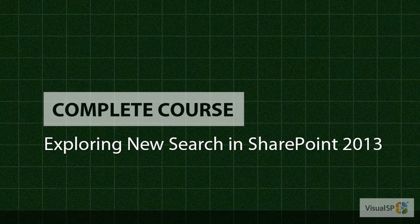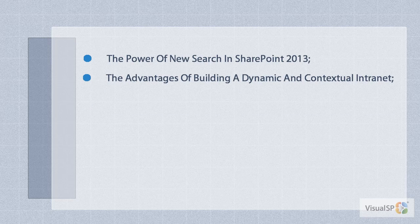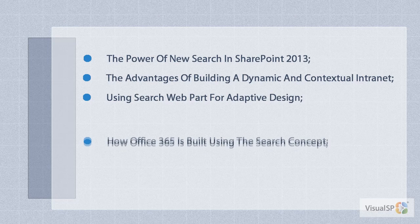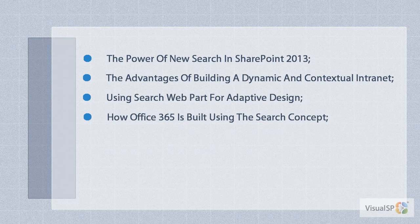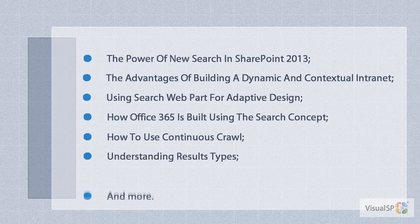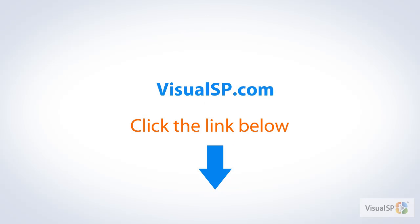This video is part of a complete one-hour course titled 'Exploring New Search in SharePoint 2013.' In this course you learn: the power of new search in SharePoint 2013, the advantages of building a dynamic and contextual intranet, using the search web part for adaptive design, how Office 365 is built using the search concept, how to use continuous crawl, understanding results types, and more. To take this course, click the link below or go to VisualSP.com.